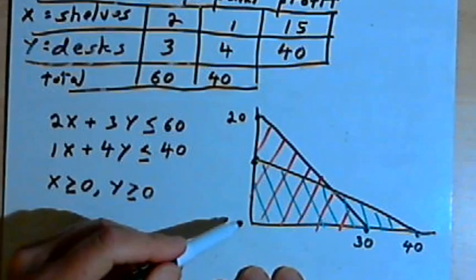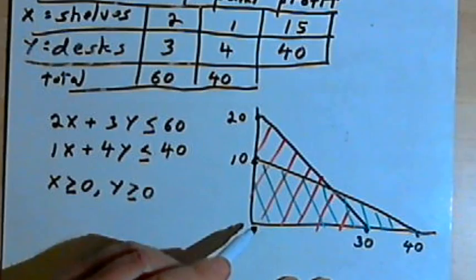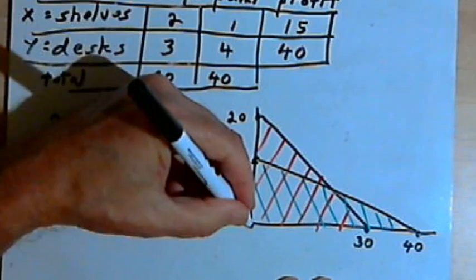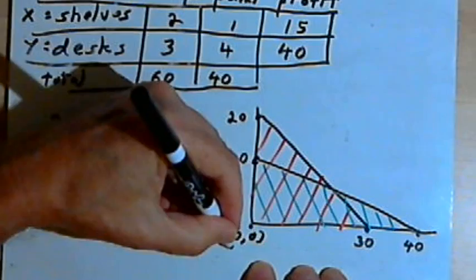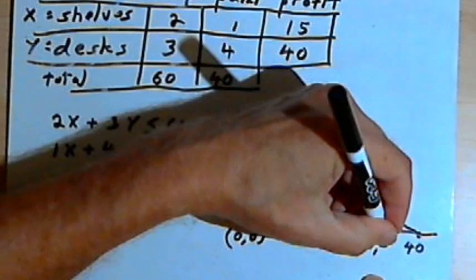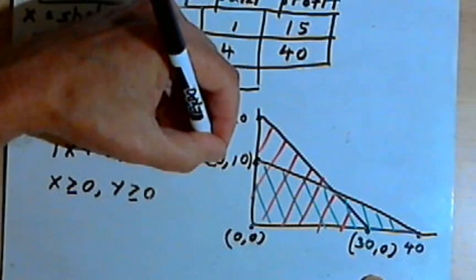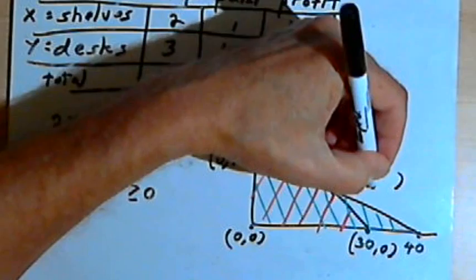The next step is going to be to find all four corner points for this region. I know three of them. I know that there's a corner point at the origin, so that's 0, 0. Over here where I'm on the x-axis, that's 30, 0. And on the y-axis, I'm at 0, 10. I want to find this last corner point where the two lines intersect.